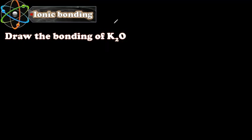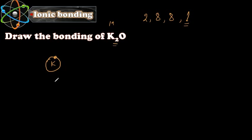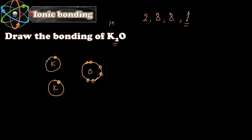Here is another example: potassium oxide. Potassium has 19 electrons so its configuration is 2,8,8,1 — in the last shell it has one electron. We have two potassium atoms, so we draw two potassium atoms each with one valence electron. Oxygen has six valence electrons. To reach eight it needs two, but each potassium atom can only give it one electron.